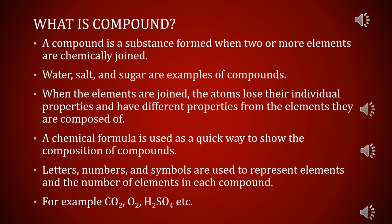A chemical formula is used as a quick way to show the composition of compounds — letters, numbers, and symbols represent elements and the number of elements in each compound. For example: CO₂ stands for carbon dioxide, O₂ stands for oxygen, and H₂SO₄ stands for sulfuric acid.